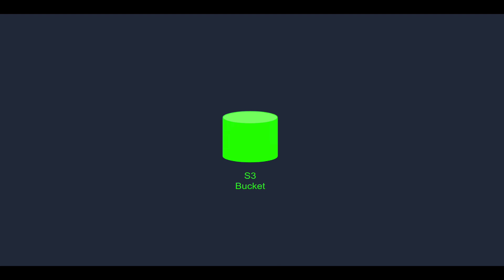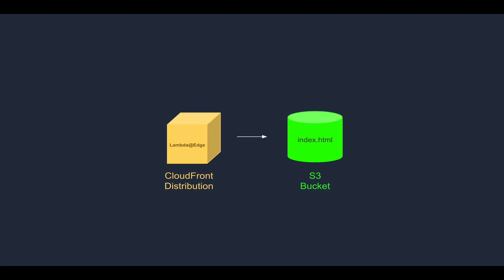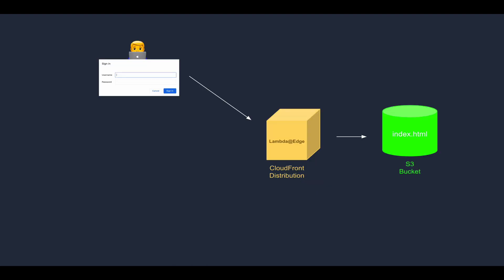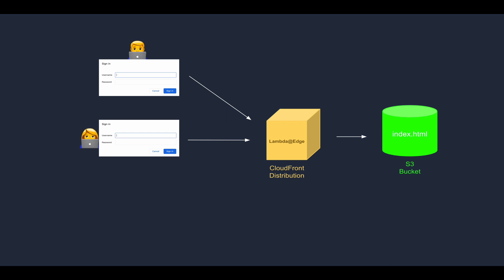We'll first create an S3 bucket which will be private and not accessible. We'll then upload a small static website and some files to it. Then we'll create a CloudFront distribution which will act as a gate to our bucket and provide us with a public URL, which will be the only way to access these files. Each time someone tries to access a file, a Lambda function will be executed that will require basic authentication and verify the credentials. The only way to access the files on our bucket will be to provide the correct username and password. If someone tries to access the files directly on the bucket, they won't be able to do so.